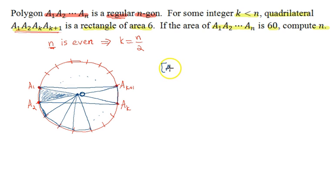The area of triangle A1, O, A2 is simply equal to 1 over 4 times the area of our rectangle. Or, alternatively, we can measure it in another way. It would be simply 1 over N times the area of our regular polygon, N-gon.